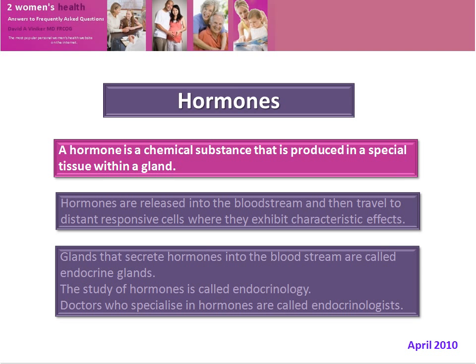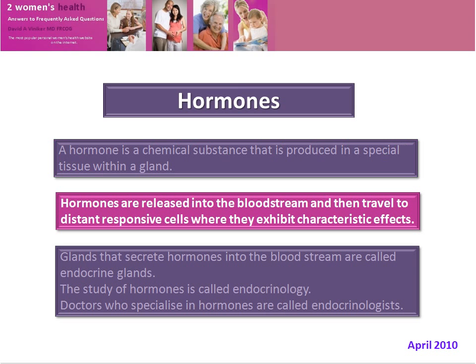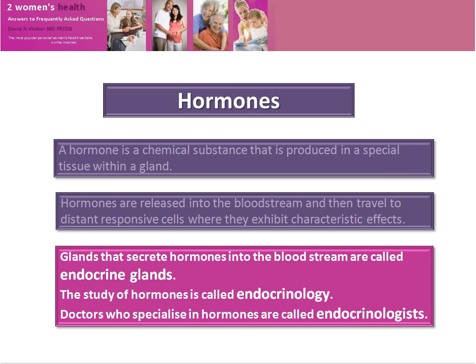A hormone is a chemical substance that is produced in a special tissue within a gland. Hormones are released into the bloodstream and then travel to distant, responsive cells where they exhibit characteristic effects. Glands that secrete hormones into the bloodstream are called endocrine glands. The study of hormones is called endocrinology and those doctors who specialise in hormones are called endocrinologists.